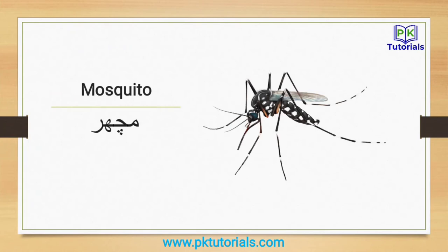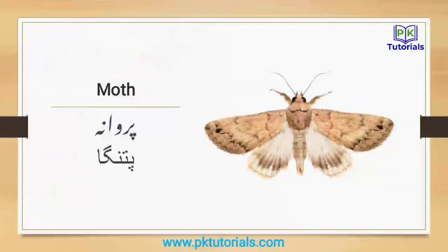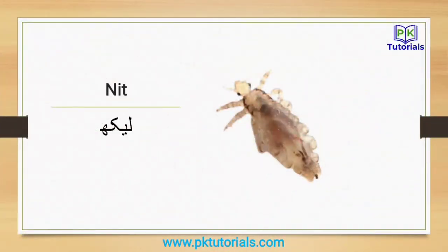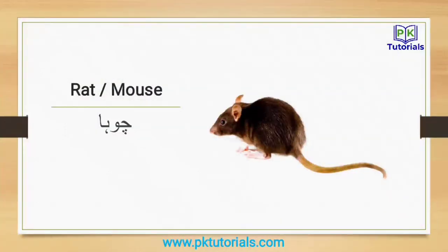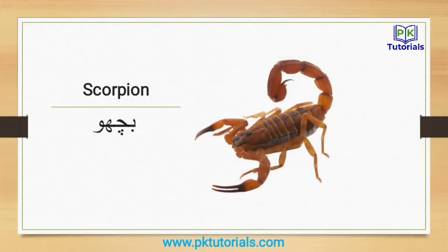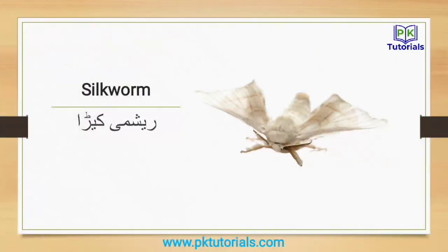Mantis: mantis. Mosquito: machar. Moth: parvana, patanga. Nit/Neet leek: rat. Rat or mouse: choha. Scorpion: bicho. Silkworm: reshmi kira.